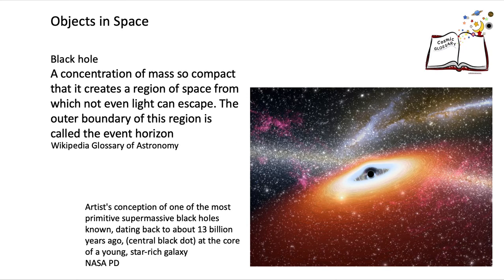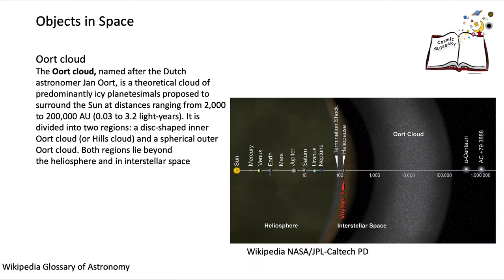Black hole: here we have an image taken by the Spitzer Space Telescope. The little black dot in the centre is the actual black hole — no light escapes from it, so all you see is the darkness.